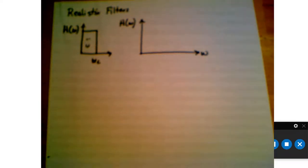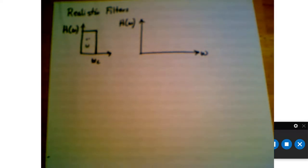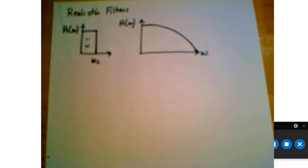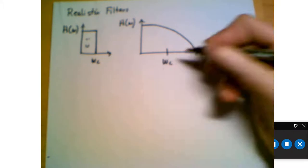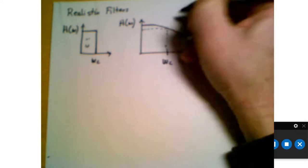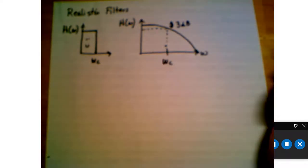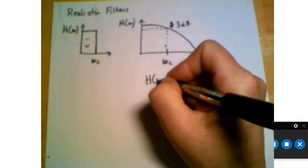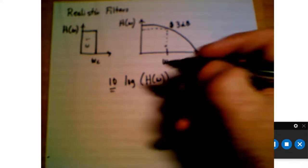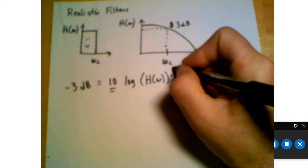In the real world, we can't produce a filter where the frequency passes completely and then drops off suddenly. That would be a brick wall filter, and we'd love to have that, but it's not possible. More realistically, our filter changes gradually. In that case, we define the 3 dB cutoff frequency — that is where the decibel value of H of omega has dropped by 3 dB. We calculate that by taking H of omega, taking its log, and multiplying by 10. When that value is minus 3 dB, that gives us the cutoff frequency.